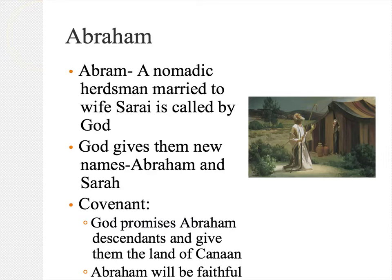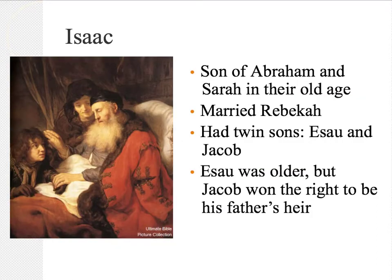God made good on his promise, and Abraham had a son. His son's name was Isaac, which means laugh, because Sarah laughed at the very idea that she could have a child at her old age. And yet it was true. Isaac married a woman named Rebecca, and they had twin sons, Esau and Jacob.